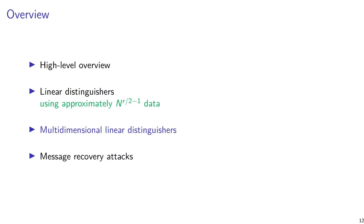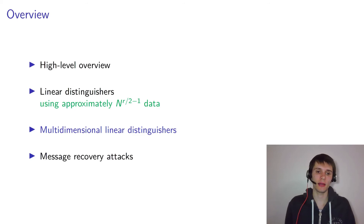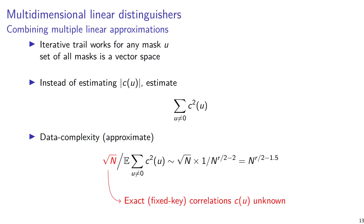We can just use multiple masks to resolve that, and this will also improve the data complexity. That's the idea behind multidimensional linear distinguishers. In a multidimensional linear distinguisher, we simply use all linear approximations — that is, for any mask u. I talk about multidimensional rather than multiple linear cryptanalysis here because the set of all these masks is also a vector space. This has a nice consequence for how the distinguisher can be implemented.